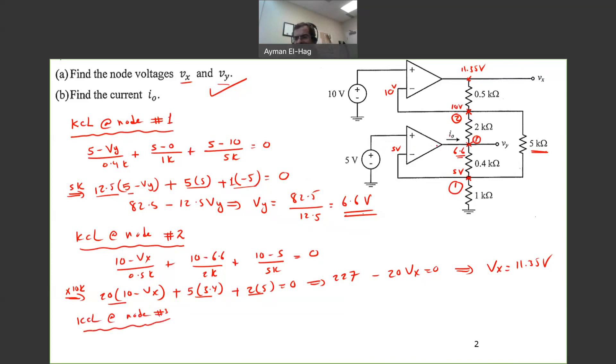So I0 is entering the node. So this becomes I0. And then we'll have two currents. This and this are both leaving the node. We can assume that, of course. So this is equal to 6.6 minus 10 divided by 2K plus the current that goes down, 6.6 minus 5 divided by 0.4K. And this is equal to minus 1.7 plus 4 and equal to 2.3 milliamps. And this is the output current of the second op-amp.